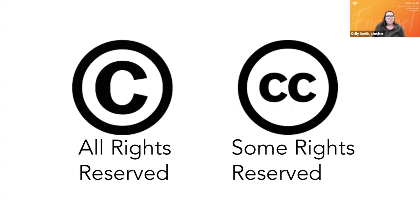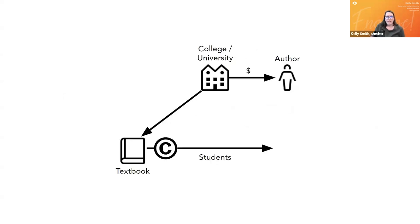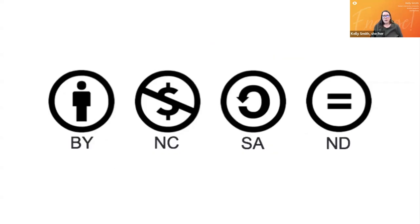When you see the CC symbol on a work, it means the creator intends the work to be freely used and shared. Going back to the publishing model, the last thing this model needs is a CC license. On this slide you can explain the four Creative Commons license components — CC BY, non-commercial, share alike, and no derivatives — and how those components work together to create the different types of licenses shown on the next slide.